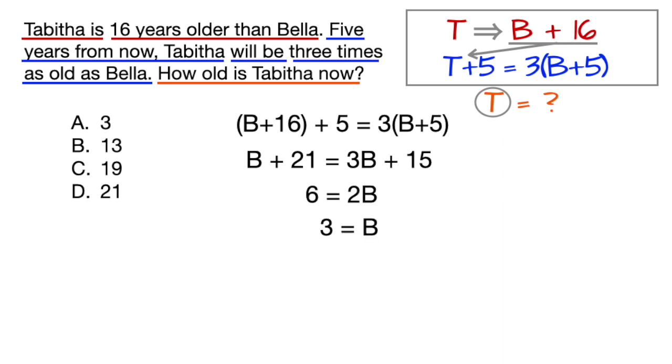But be careful if 3 is actually in the answer choice set. Refresh on the question. And remember, we have to solve for Tabitha. So plug 3 in for B into either one of the equations and solve for T.